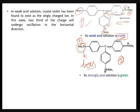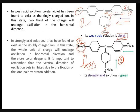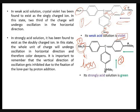That's why structure one has more resonance structures and shows higher color intensity. In structure two, resonance is possible but less, so the color intensity goes down from violet to the green side. Only one position remains for this oscillation.